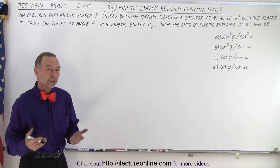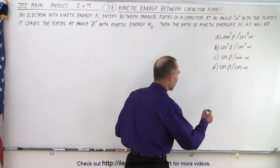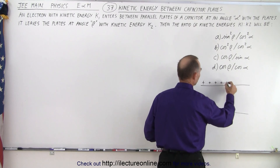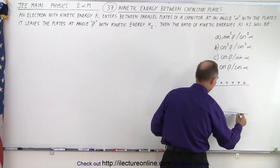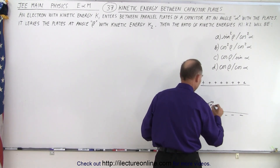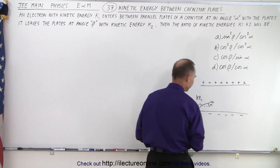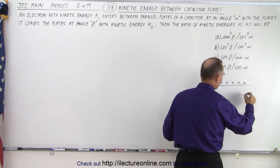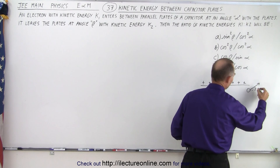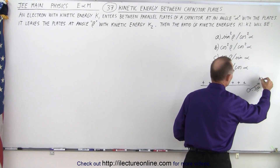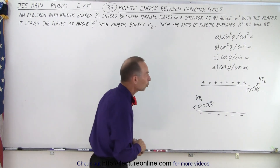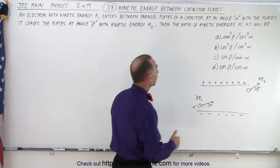They didn't give us a drawing, but let's put one together to get a better picture of what's going on. Here we have capacitor plates — on one side positively charged, on the other negatively charged. An electron enters the plate at some angle alpha with kinetic energy KE1. It goes through, and by the time it exits it's moving at a different angle, beta, with kinetic energy KE2. And the question is: what is the ratio of those two kinetic energies?